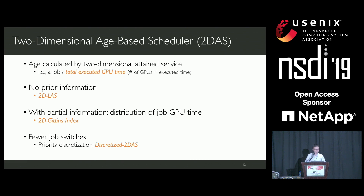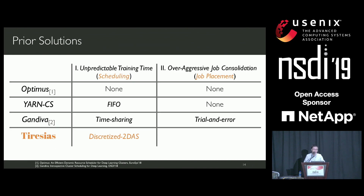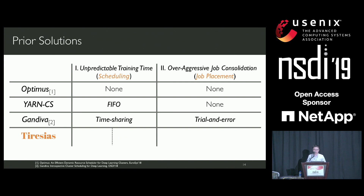To handle the challenge of unpredictable training time, we propose the Discretized Two-Dimensional Age-Based Scheduler. It can work with different available job information by either applying a LAS-based algorithm or a Gittins index-based algorithm.